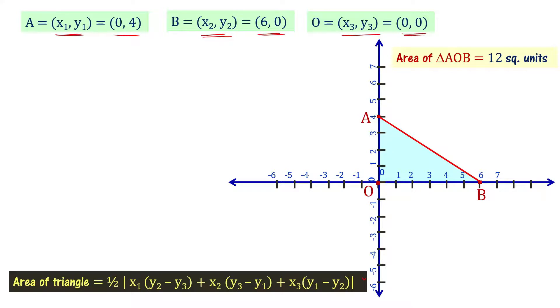Now, area of the triangle formula we will substitute. Then it is half times modulus of x₁ - x₁ is 0 - 0 times y₂ is 0 minus y₃, that is also 0. 0 times (0 minus 0). Then, plus x₂ equal to 6. 6 times y₃ - y₃ is 0 and y₁ is 4 - (0 minus 4).